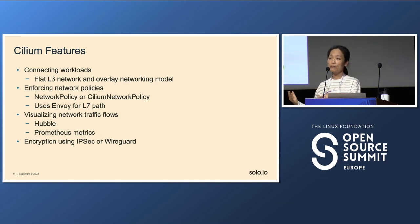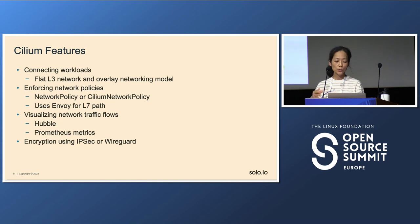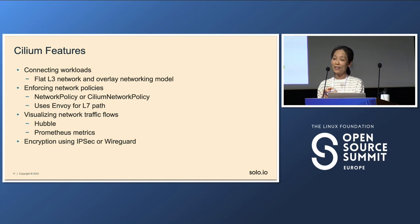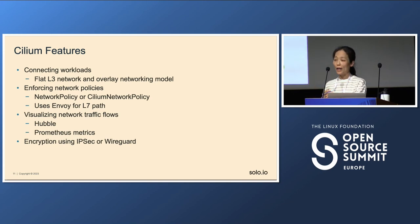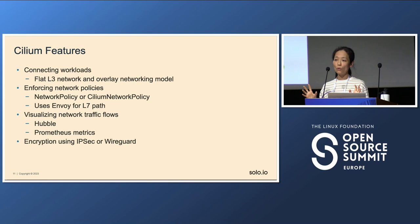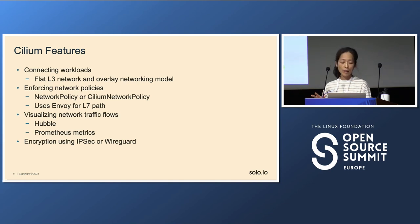What Cilium does is leverage the great functionality from eBPF to allow you to connect your workloads through layer three networking and also the typical overlay networking model. Cilium implements the CNI container network interface, and it also has its own enhancement on top of standard Kubernetes network policy called Cilium Network Policy. Cilium also provides a very nice visualization tool called Hubble, which allows you to visualize what's going on within your pods and network. You can also configure encryption with IPsec or WireGuard.